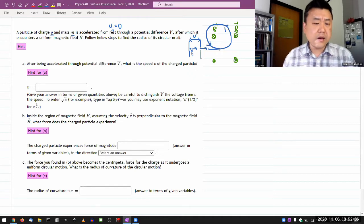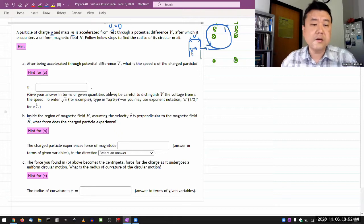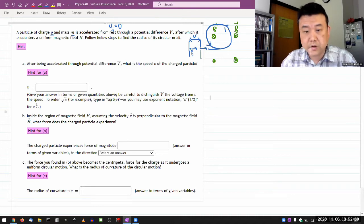And that's what this is getting at. And then the question tries to walk you through it, it goes through the steps that you should be going through. So let me go through those steps. It asks, after being accelerated through potential difference, what is the speed of the charged particle?